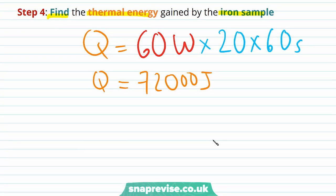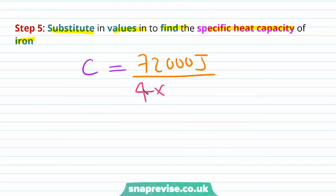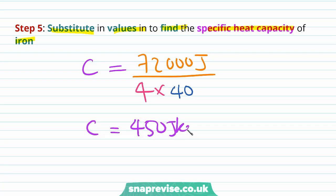Our final step is to substitute values into the specific heat capacity equation. C equals 72,000 joules divided by 4 kilograms times 40 Kelvin, giving an answer for C of 450 joules per kilogram per Kelvin.